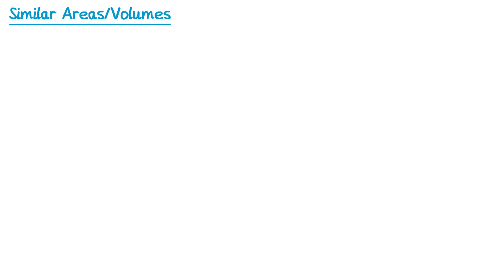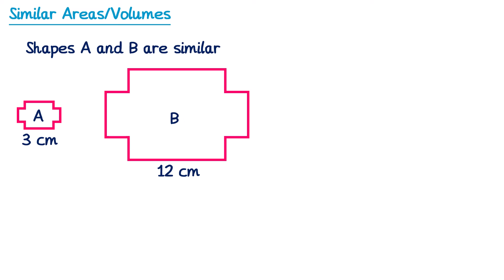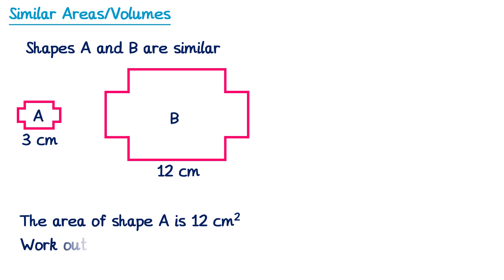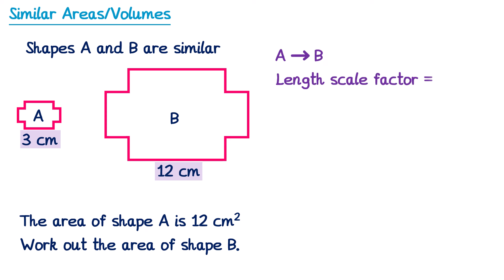Let's have a look at what an exam question could look like. We're given two similar shapes A and B — shape A has an area of 12cm squared, and we're asked to work out the area of shape B. Looking at the diagram, we have two corresponding lengths: 3 on the bottom of A and 12 on the bottom of B. Since we're working from A to B, the length scale factor is 12 divided by 3, which is 4. So the lengths on shape B are 4 times as large.